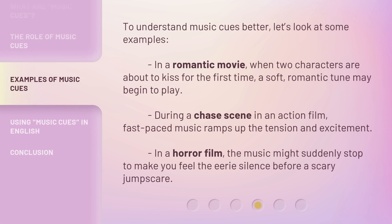To understand music cues better, let's look at some examples. In a romantic movie, when two characters are about to kiss for the first time, a soft, romantic tune may begin to play. During a chase scene in an action film, fast-paced music ramps up the tension and excitement. In a horror film, the music might suddenly stop to make you feel the eerie silence before a scary jump scare.